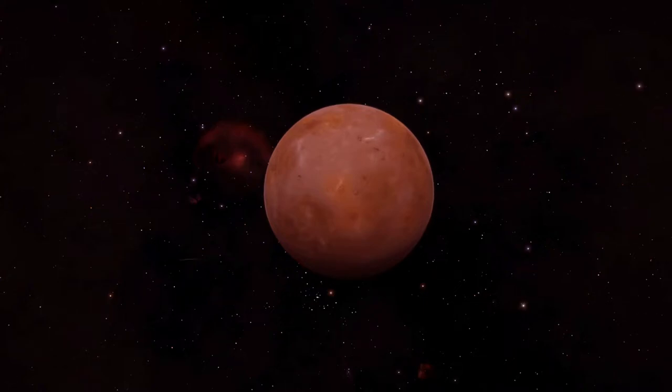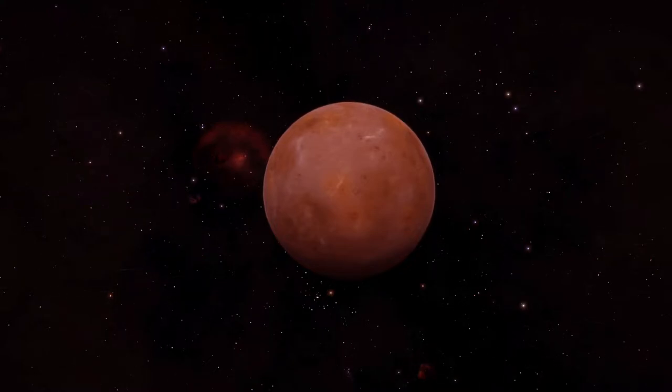Proxima Centauri b, the nearest exoplanet to the Earth. It is approximately 4.2 light-years from Earth in the constellation of Centaurus, making it the closest known exoplanet to the solar system.